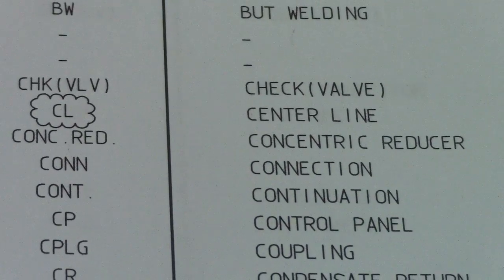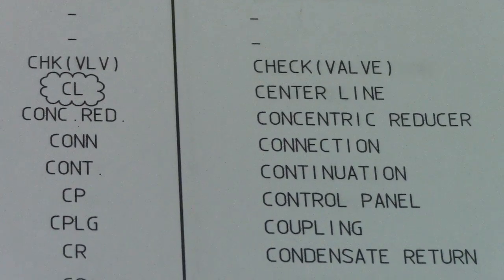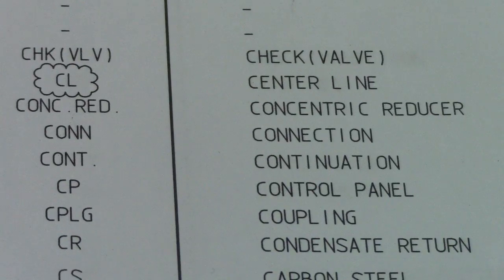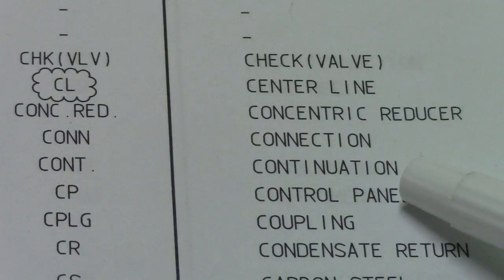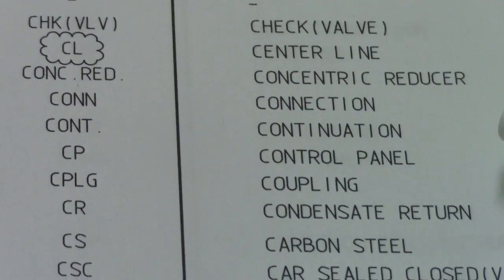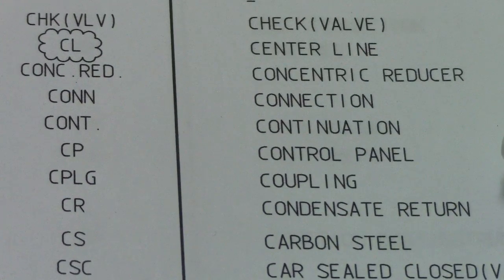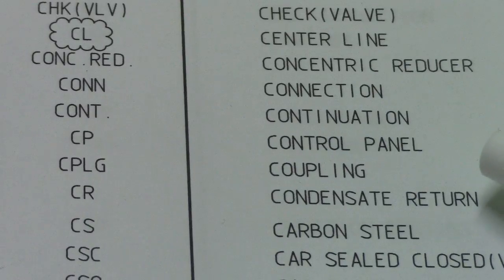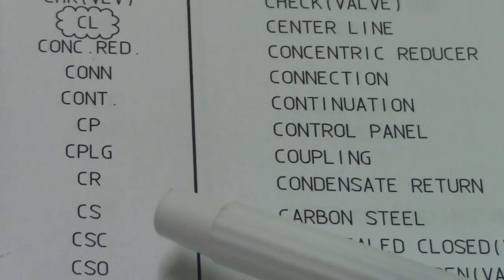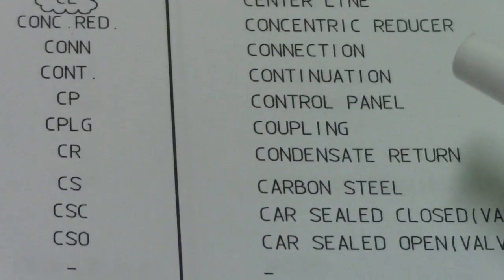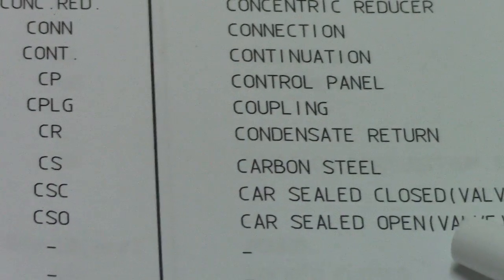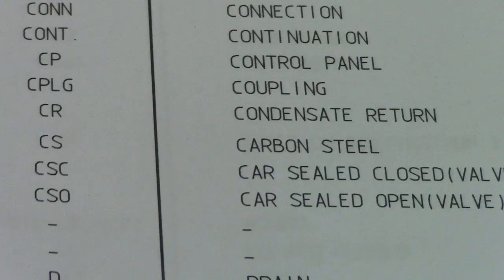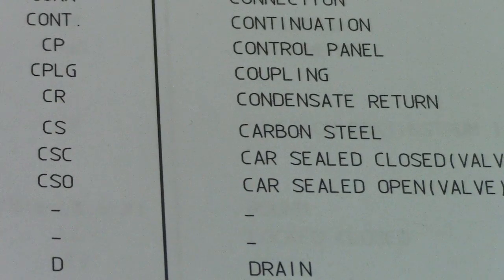CR is concentric reducer, CONN is connection, CONT is continuation. An example interview question would be: what is CR? What is CS? CS is carbon steel. CSC is car sealed close, and CSO is car sealed open.